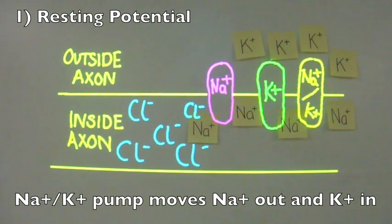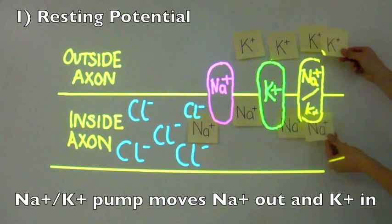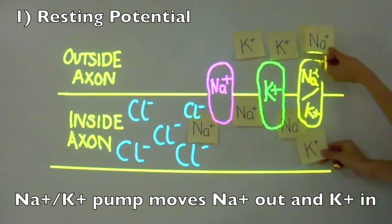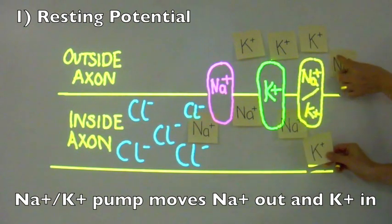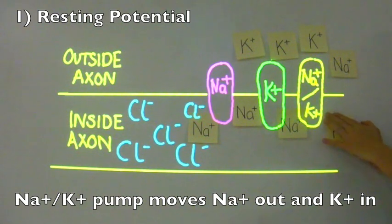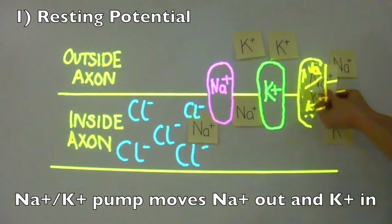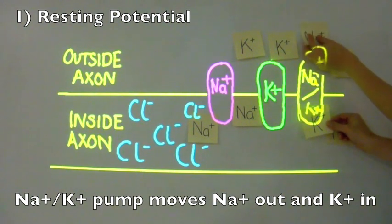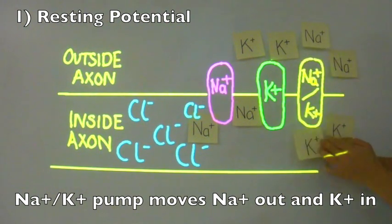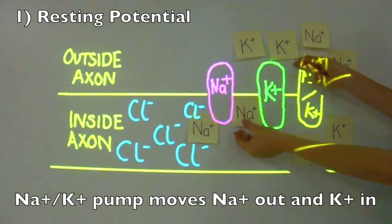The first stage of explaining the passage of a nerve impulse along an axon is to establish resting potential. To do this, we use the sodium potassium pump, which pumps sodium ions (Na+) outside of the axon and potassium ions (K+) inside the axon.